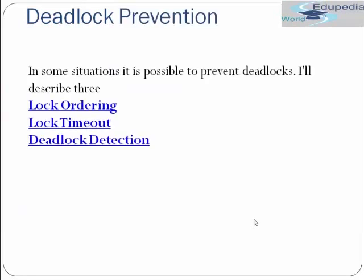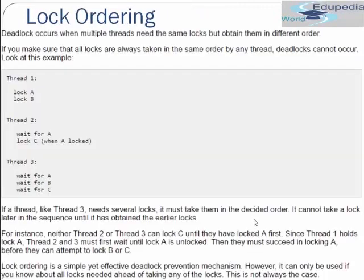In some situations it is possible to prevent deadlock. There are three techniques: lock ordering, lock timeout, and deadlock detection. Let's see each one by one and see how you can prevent deadlock using them.